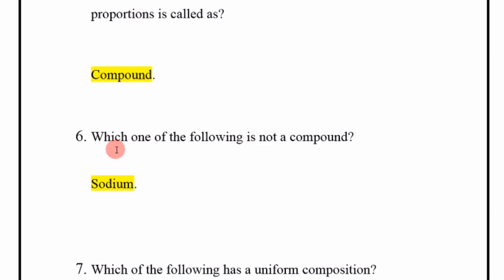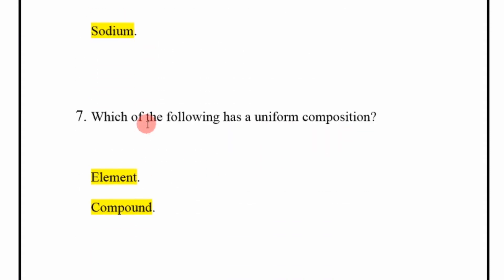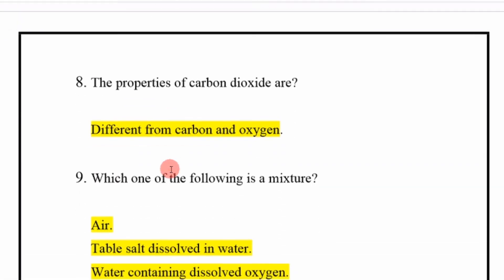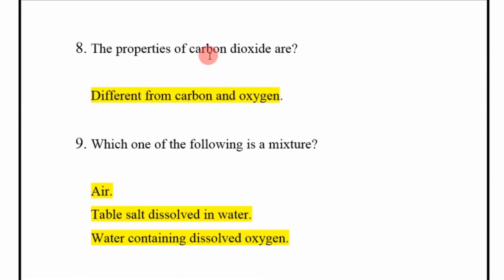Which one of the following is not a compound? Sodium. Which of the following has a uniform composition? Element, compound. The properties of carbon dioxide are different from carbon and oxygen.